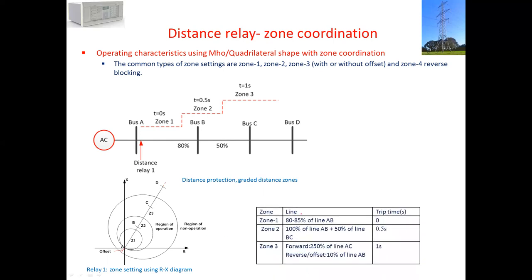This is a generic setting. Zone 1 is 85% of line AB with trip time of 0 second. Zone 2 is 100% of line AB plus 50% of line BC. Zone 3 is 250% of line AB, so 100% plus 50% plus another 100%, with trip time of 1 second. The offset is 10% of line AB, so 10% is extended behind the relay.